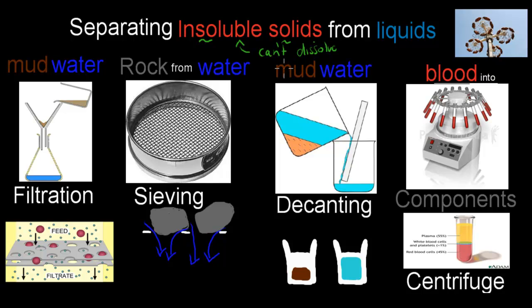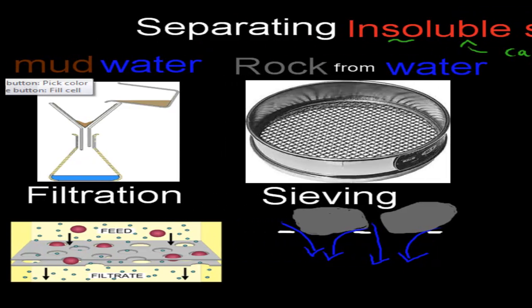So how can we separate a solid that can't dissolve from liquids? That's the question. And there's four ways you should know. We'll go through those four ways now. For example, if we have mud and water.